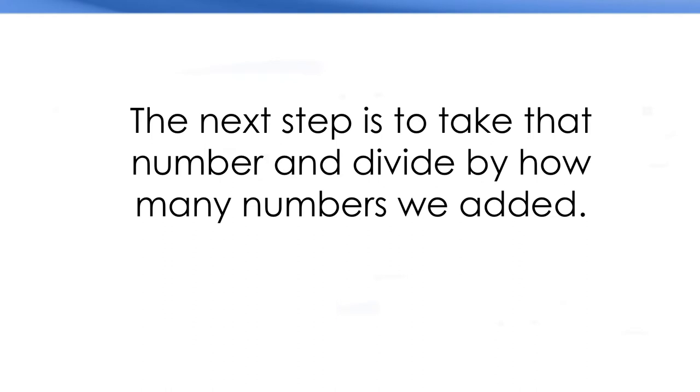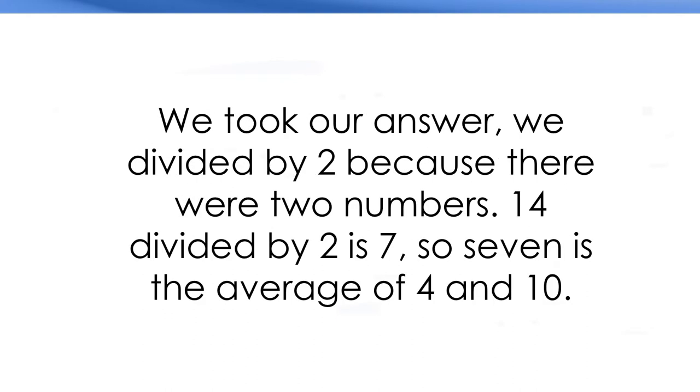The next step is to take that number and divide by how many numbers we added. We took our answer, we divided by 2 because there were two numbers. 14 divided by 2 is 7, so 7 is the average of 4 and 10.